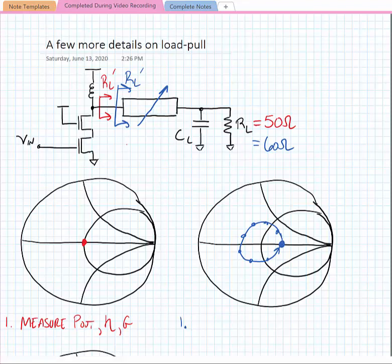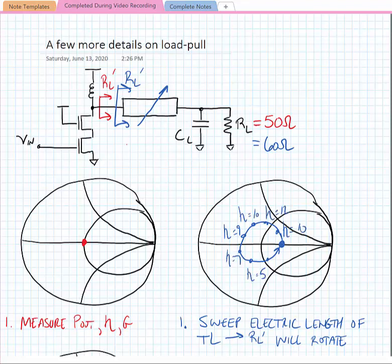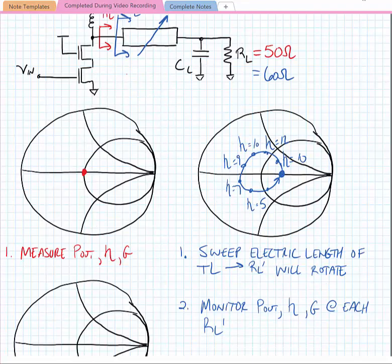Now, as we were to sweep this R sub L prime around this circle, we would find that there would be different values of efficiency at every point that we measure. Similarly, we could also measure the output power, and we'd find that at each point the different impedances would yield different output powers and also different gains. So at each point we want to monitor the output power, efficiency, and gain.